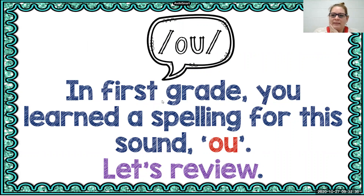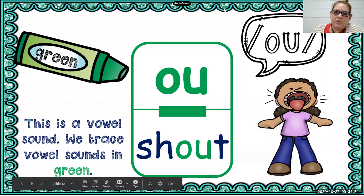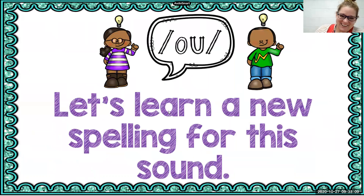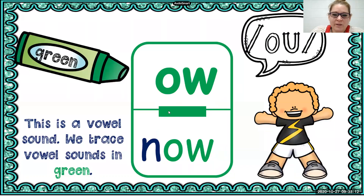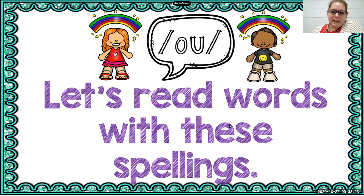In first grade you learned a spelling for the sound ow and it was O-U like in shout. So this is a vowel sound and we are going to trace it in green on our individual code flip chart. I want you to look at the power bar — it is not really big, which means that there are other ways to spell the sound ow. The other way to spell the sound ow is with O-W. O-W also says ow like in the word now.